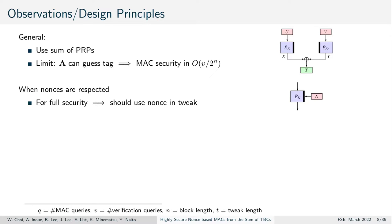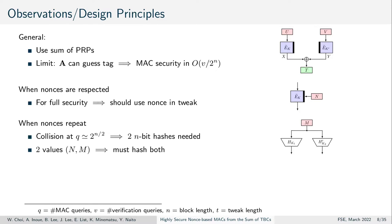When nonces are respected, using the nonce as a tweak in a TBC helps us since it transforms a tweakable block cipher into a PRF. When nonces repeat, on the other hand, there will be hash collisions after 2^(n/2) queries for an ideal single hash.